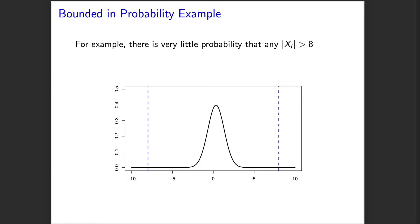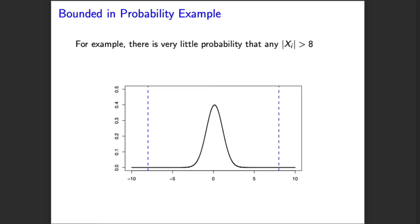Here we have blue dotted lines at plus and minus eight. Plugging in eight as c, we can think about how much probability there is that any of our xi are greater than eight. Cycling through elements of our sequence, we see that for all of those elements there's only a tiny amount of probability mass either greater than eight or less than negative eight, and that is well controlled even as we increment indices in our sequence, looking further and further. That doesn't grow.